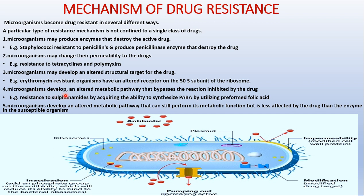Mechanism number four: microorganisms develop an altered metabolic pathway that bypasses the reaction inhibited by the drug. Certain drugs are structured to stop a metabolic pathway, but these microorganisms will bypass that blocked step. For example, some bacteria have developed resistance to sulfonamides by acquiring the ability to synthesize PABA by utilizing preformed folic acid.